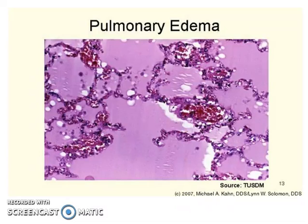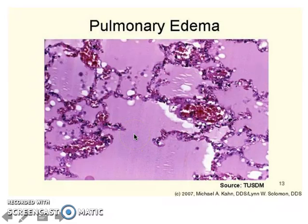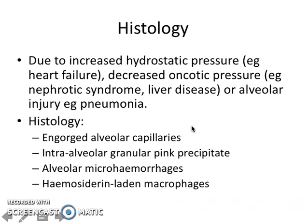Pulmonary edema is another important component and a common clinical finding, commonly seen in autopsy specimens. Histologically, you can see granular pink substance within the alveoli, presence of hemosiderin-laden macrophages, engorged alveolar capillaries, and alveolar hemorrhages. It is due to increased hydrostatic pressure — for example from heart failure — decreased oncotic pressure, for example from nephrotic syndrome or liver disease, or alveolar injury such as from pneumonia or chemicals.